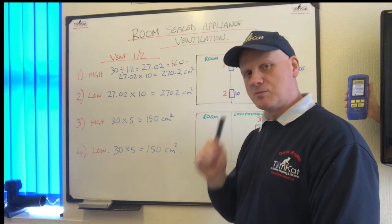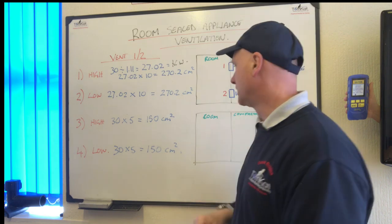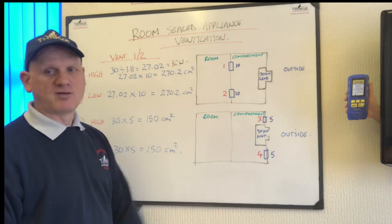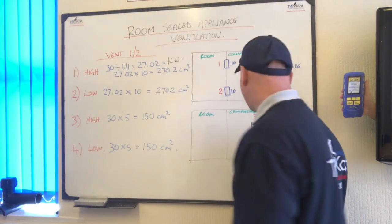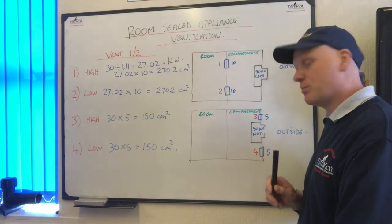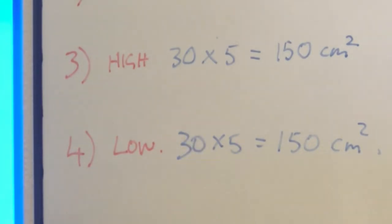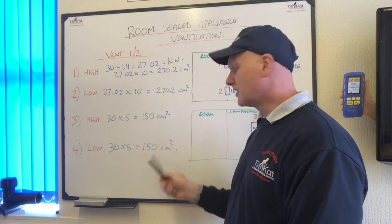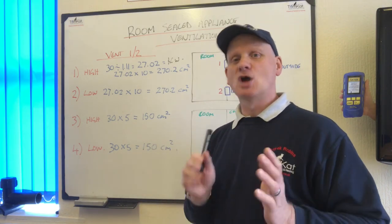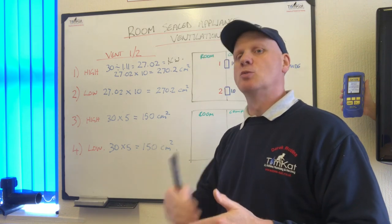When doing room sealed compartment ventilation for cooling, the two vent figures are always the same — unlike open flued appliances. Now for outside air (5 and 5), using a 30 kW net boiler: 30 × 5 = 150 cm² high vent, and 30 × 5 = 150 cm² low vent. The key difference from open flued: room sealed cooling has equal high and low vents, whereas open flued has the bottom vent double the top.